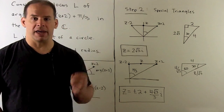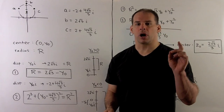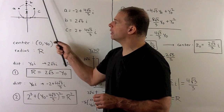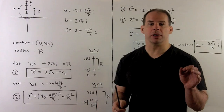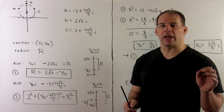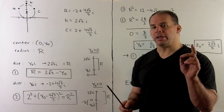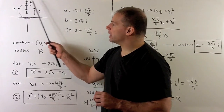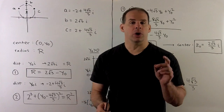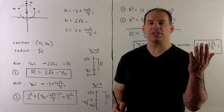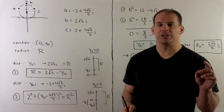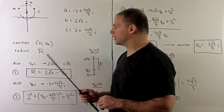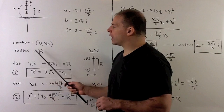We draw our picture, plot the three points, and fit a circle to them. If we've drawn the picture well, the center is going to be above the real axis — a good check for our work. The circle is symmetric about the imaginary axis, which means the center is on the imaginary axis. In terms of the xy-plane, the center is (0, y₀) and we'll call the radius capital R.